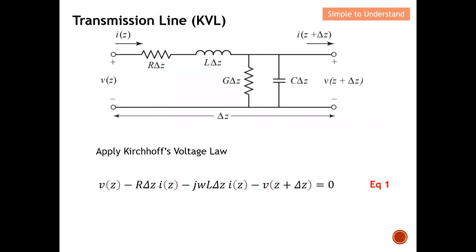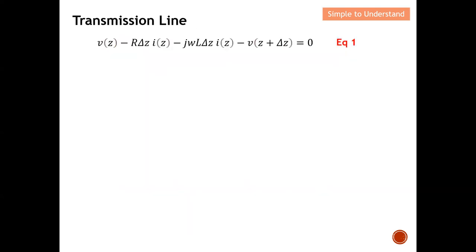Earlier on I derived the Kirchhoff Voltage Law in the Part 2 series, which I used as Equation 1. Now I'm going to show you step by step how to solve this. What I want to do is put certain terms on the right-hand side, take the common factor — which is delta-z and I(z) — and arrive at a rearranged equation.